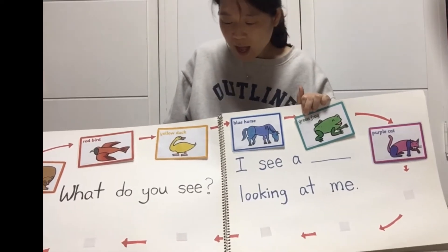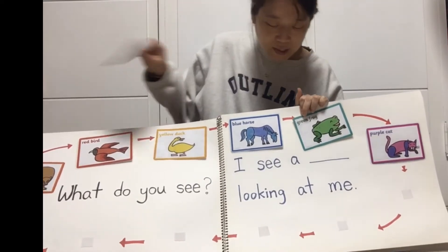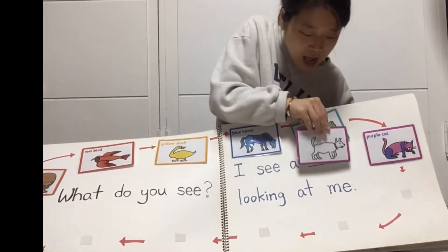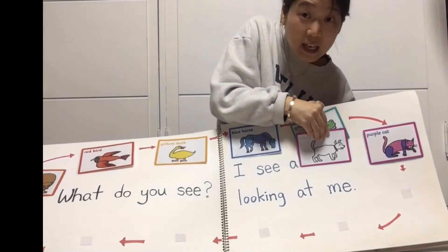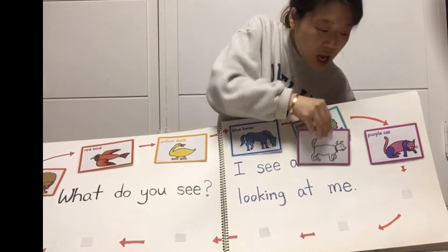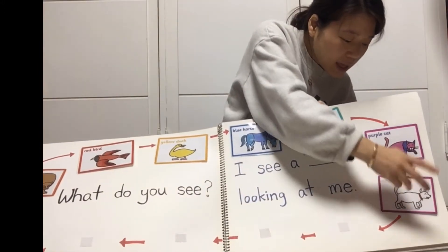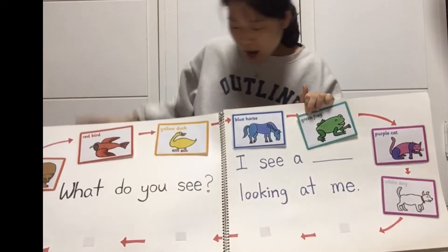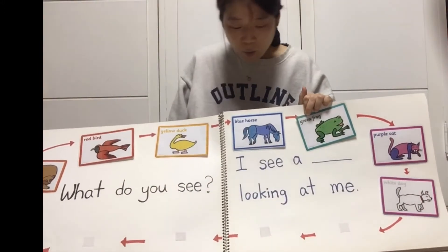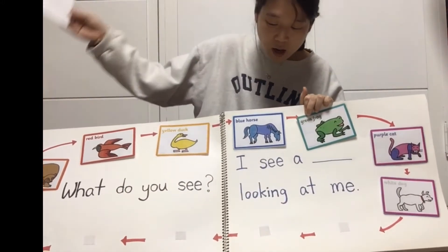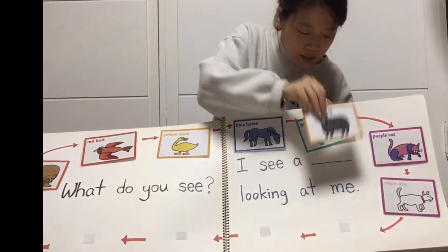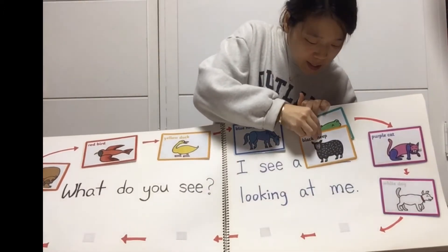I see a purple cat looking at me. Purple cat, purple cat, what do you see? I see a white dog looking at me. White dog, white dog, what do you see?